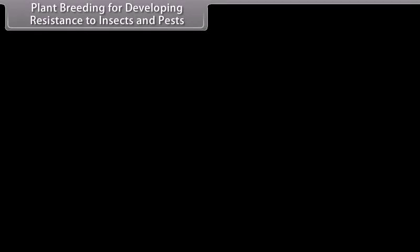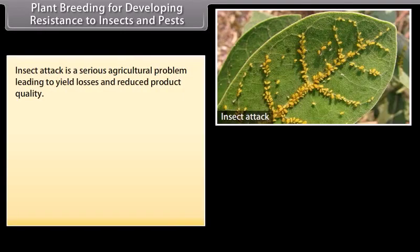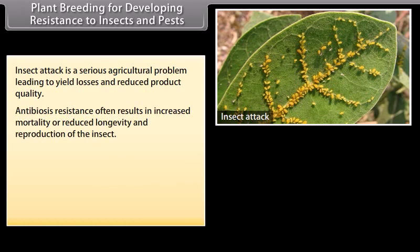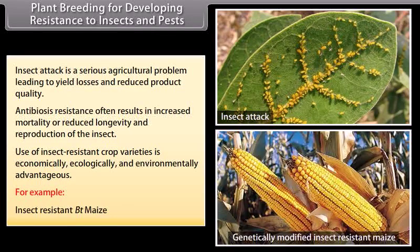Plant breeding for developing resistance to insects and pests: insect attack is a serious agricultural problem leading to yield losses and reduced product quality. Antibiosis resistance often results in increased mortality or reduced longevity and reproduction of the insect. Use of insect-resistant crop varieties is economically, ecologically and environmentally advantageous. For example, insect-resistant flat maize.